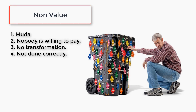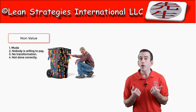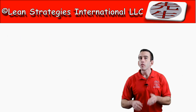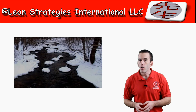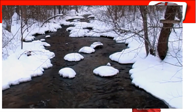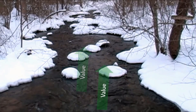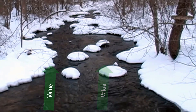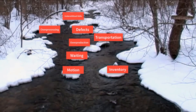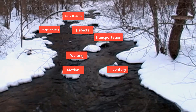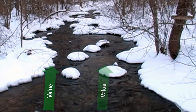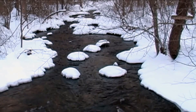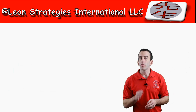Non-value waste is best found by looking from the customer's perspective and asking, 'Would I be willing to pay for this?' This type of waste is best understood with the analogy of a stream. Our work activities are the water, which we expect to flow freely from beginning to end. If the stream is full of rocks and junk, the water can no longer flow freely. These rocks represent the waste we call non-value or muda. When we identify and remove these rocks, we save space, improve time, and free up resources so the stream can flow rapidly to its destination again.